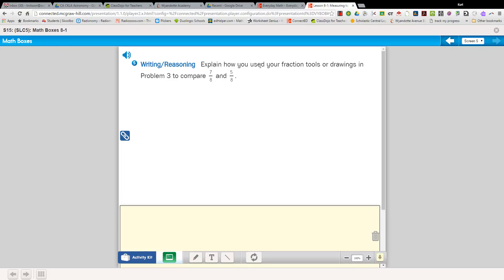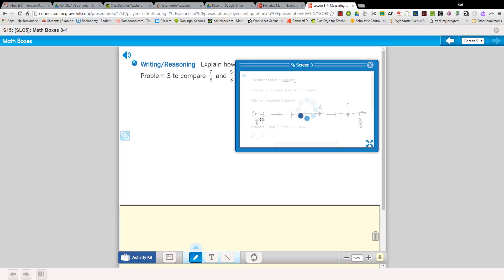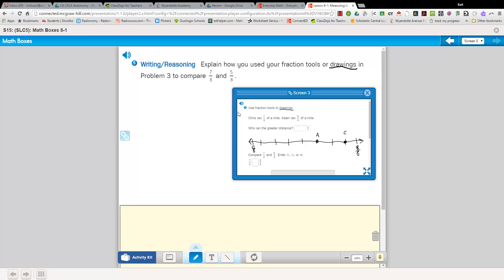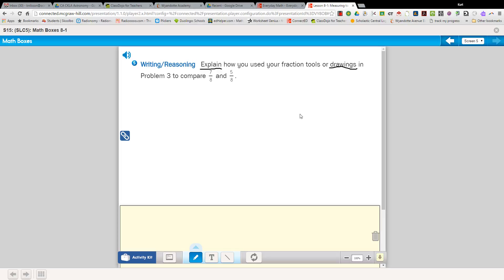Box 5 says, explain how you used your fraction tools or drawings, we used the drawing, in problem 3 to compare. So you're going to think back to your drawing that you made. Remember this drawing you made? You're going to explain how you used your drawing to tell which one was greater. Was it 7/8 or was it 5/8? You can tell which one is greater by looking at the number line. But the job now is to explain. So this is more than maybe a word or two. This might be a sentence or a couple sentences. Okay, when you're done, bring your math journal to me. I'd like to look it over. All right, bye!